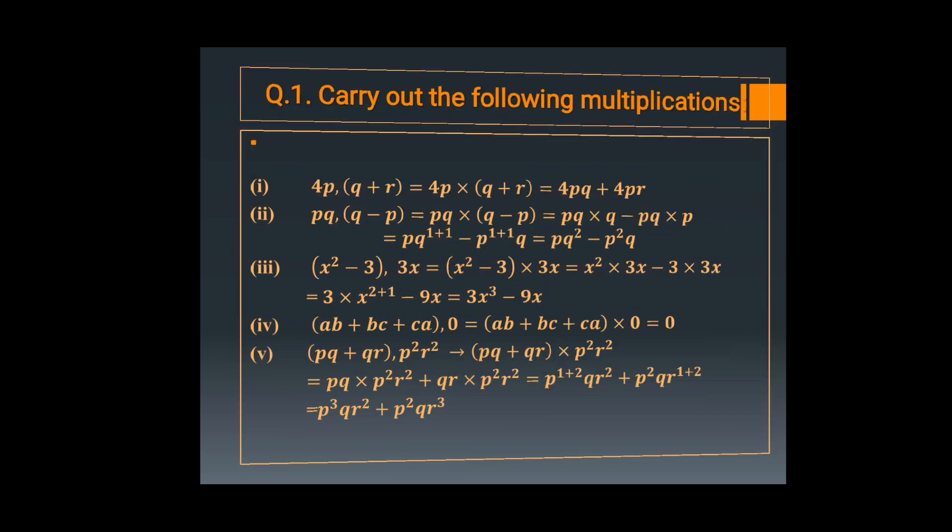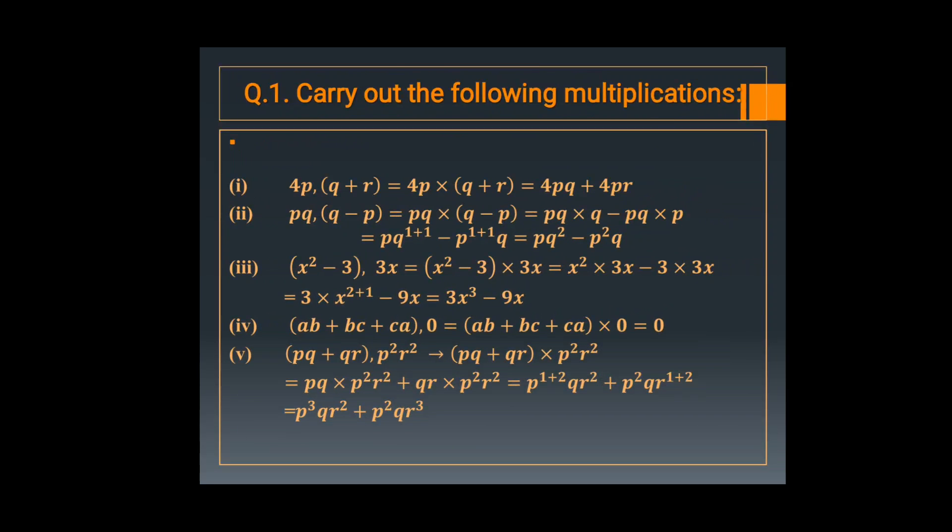Now in this exercise, we will solve the first question: carry out the following multiplications. In this question, you need to multiply two different polynomials. First, 4P into Q plus R — 4P is a monomial and Q plus R is a binomial. So 4P multiplied by Q, then 4P multiplied by R, so it is 4PQ plus 4PR.